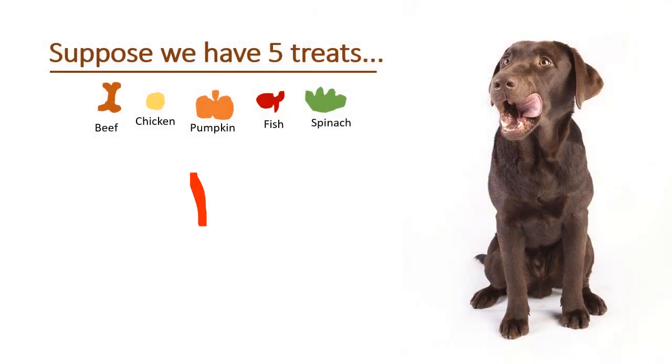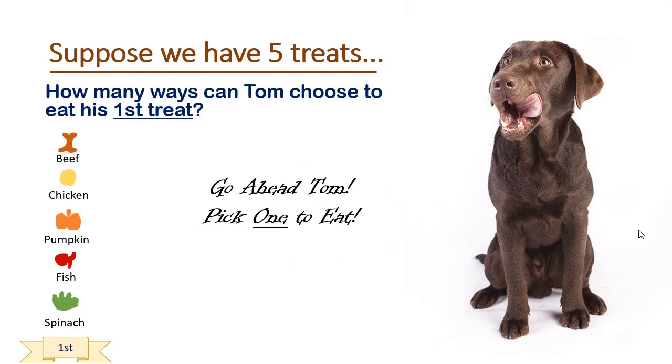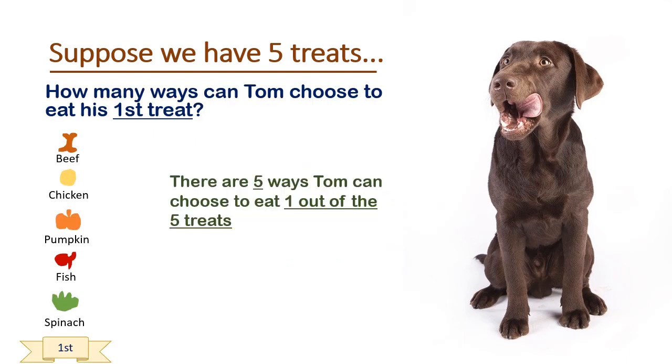This young man over here is Tom. We have five treats for Tom. Go ahead Tom, pick one to eat first. Okay, so if there are five treats and Tom gets to eat one, he could have made any of five different choices. He could have chosen to eat beef, chicken, pumpkin, fish, or spinach.